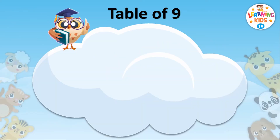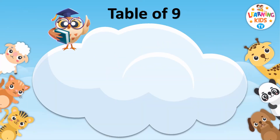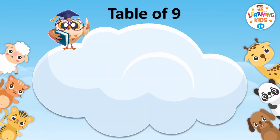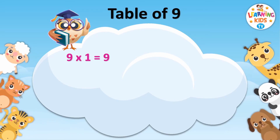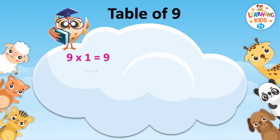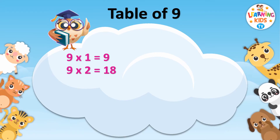Table of Nine. Nine ones are nine. Nine twos are eighteen.